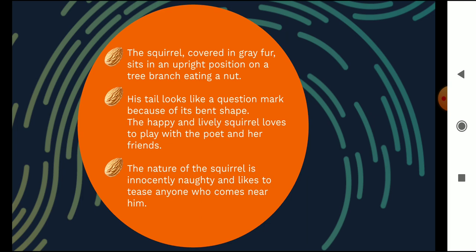The squirrel covered in grey fur sits in an upright position on a tree branch eating a nut. So the squirrel, it is covered in grey fur. What does the fur look like in colour? It looks grey in colour. And he is sitting in an upright position, sitting very straight and is very busy in eating a nut.